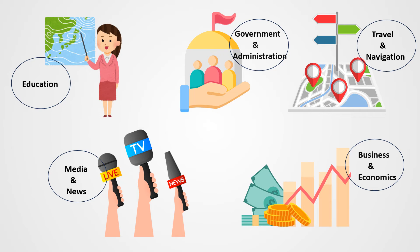In summary, a political map is a crucial tool for understanding the human-made division of the world. It provides clear and accessible information about the boundaries and organization of various regions.